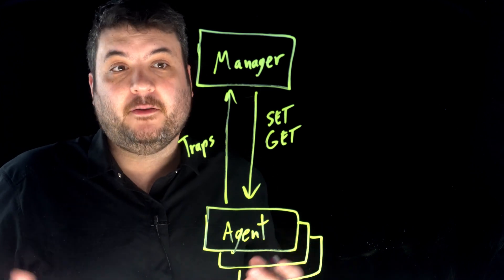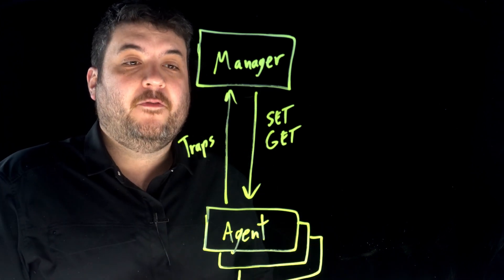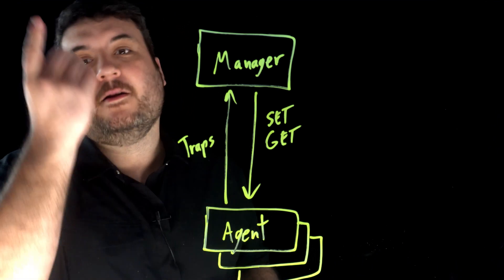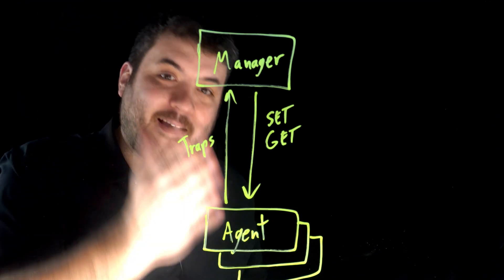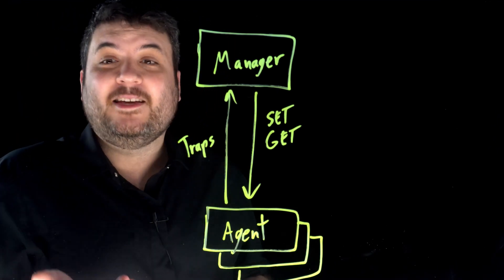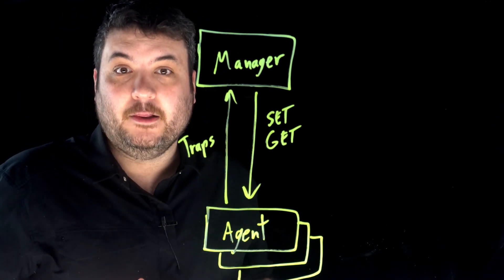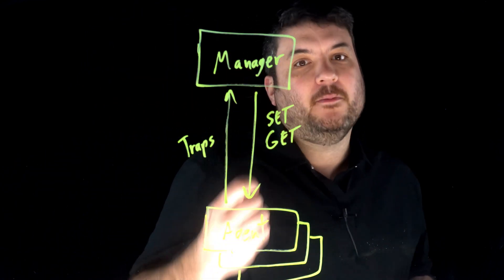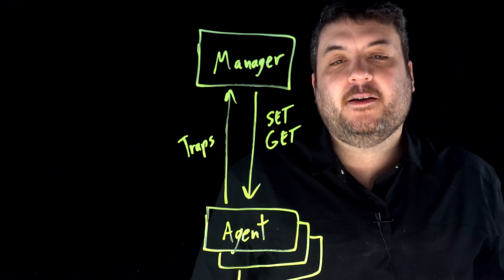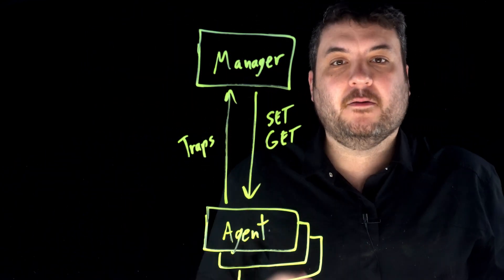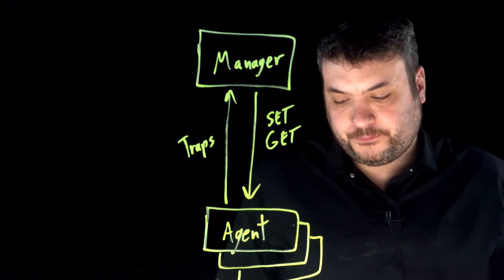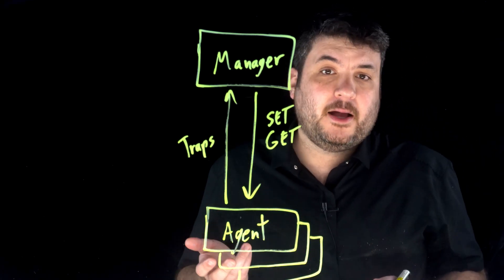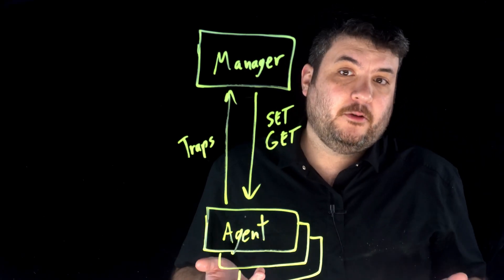Imagine we wanted to get a lot of things. Before get bulk, we had to say give me one thing, okay response, give me the next thing. There was actually get next, which facilitated that looping — give me the next one, give me the next one — and you could walk through a device and have it spew out all of its values. Get bulk is a way to do that, but a bit more elegantly as a single message.